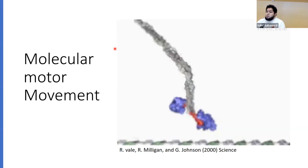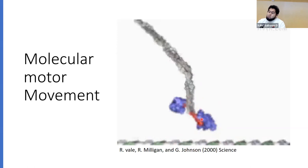A motor protein called a molecular motor actually transports organelles throughout the axon. These two blue blobs would be moving on the microtubule, and these green sites are the spots that these proteins attach to. The blobs move subsequently throughout the microtubule until they reach their destination, and a similar process occurs.